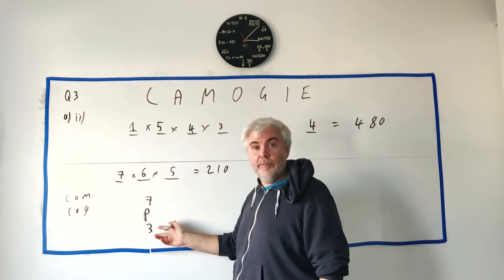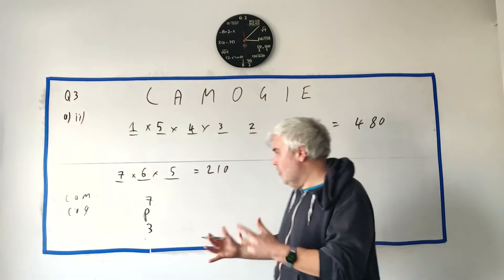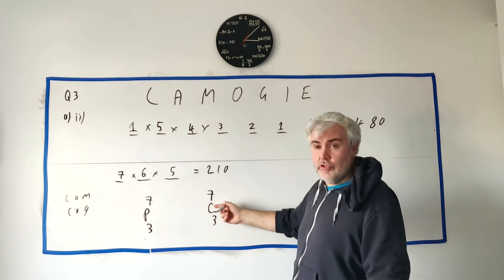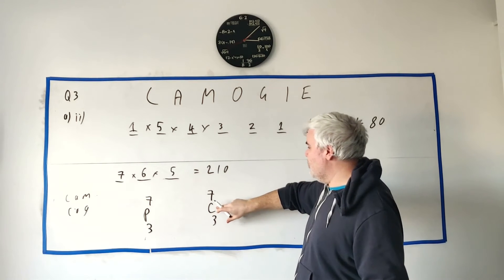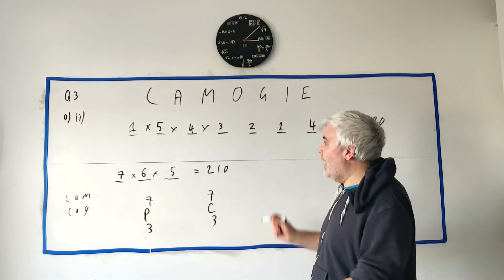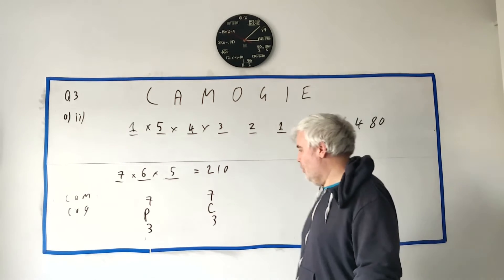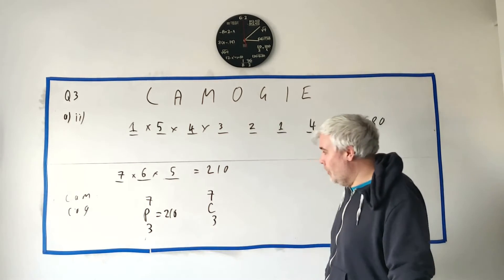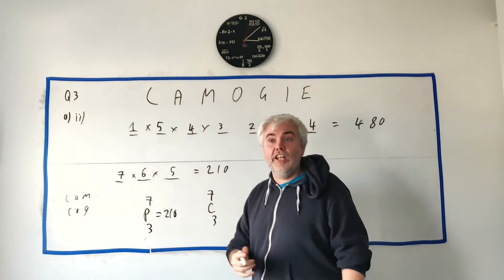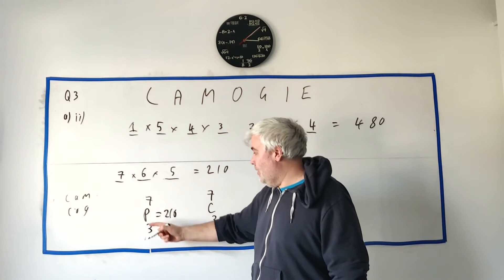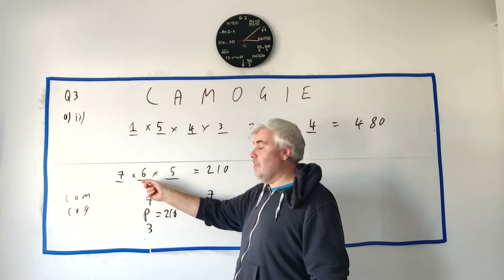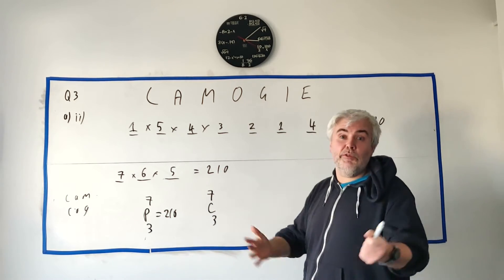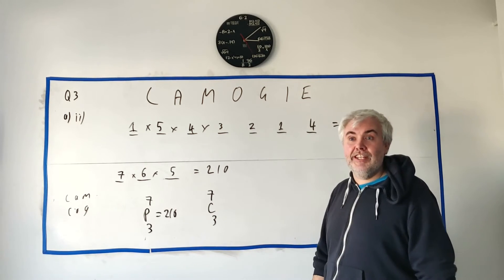Another way to write this is 7P3 — seven total choices, taking three, with order mattering. P stands for permutation. You'll also see 7C3, which is a combination — that applies when order doesn't matter and gives a smaller number. Many students would write 7P3 directly and type it into a calculator using the P button, instantly getting 210 without multiplying step by step.